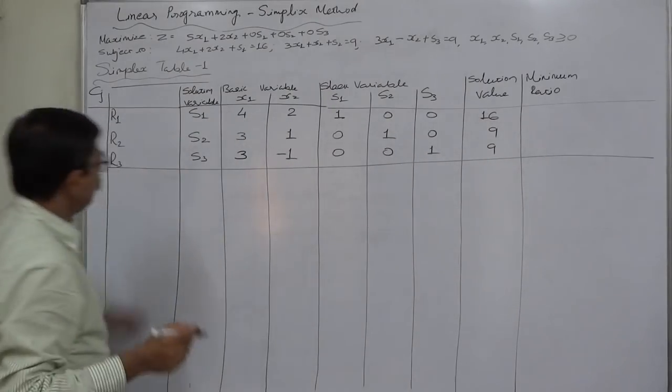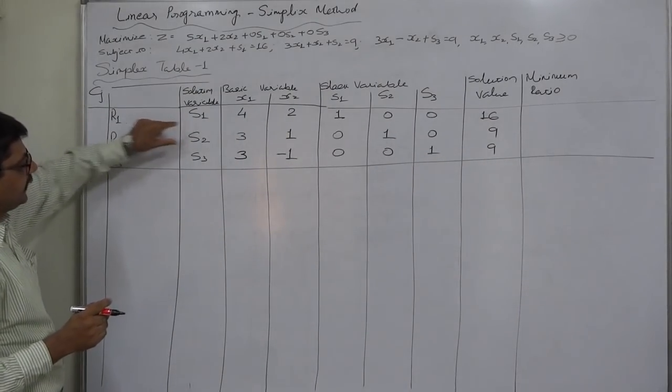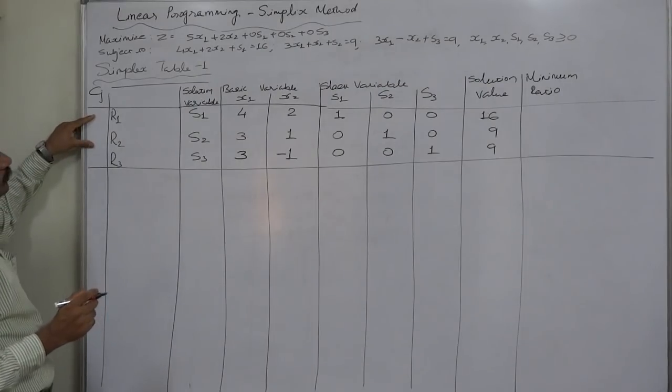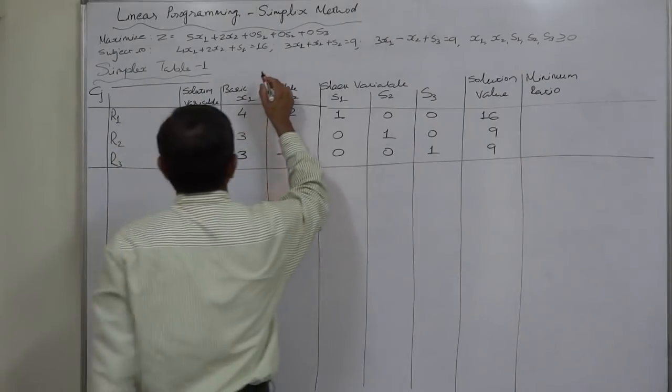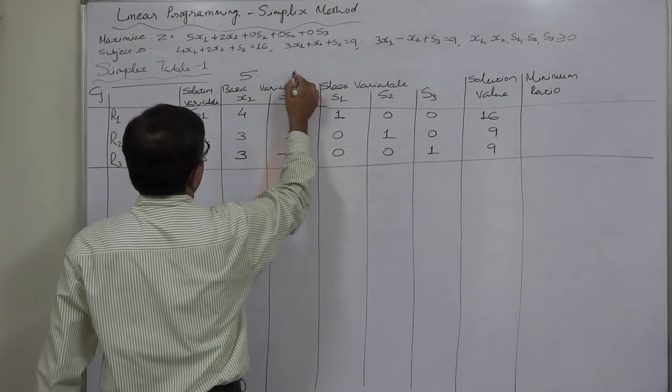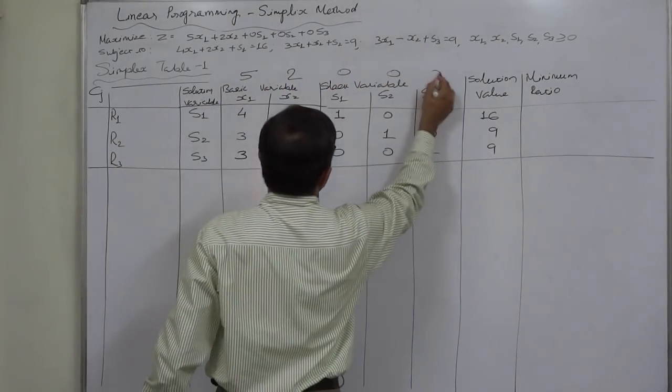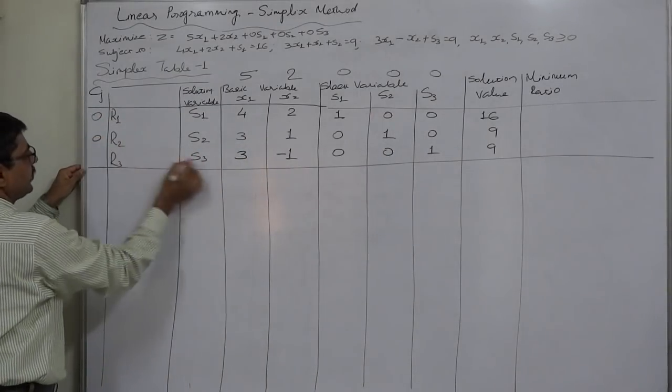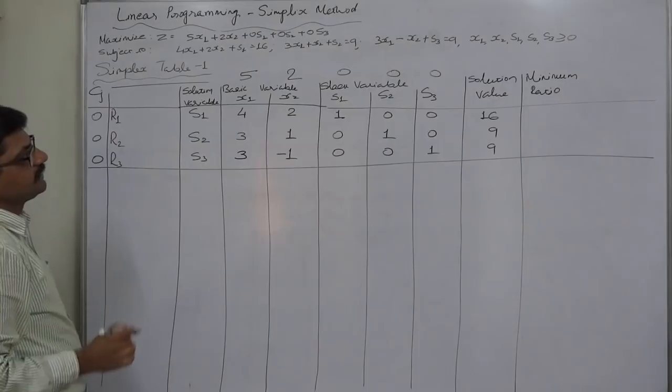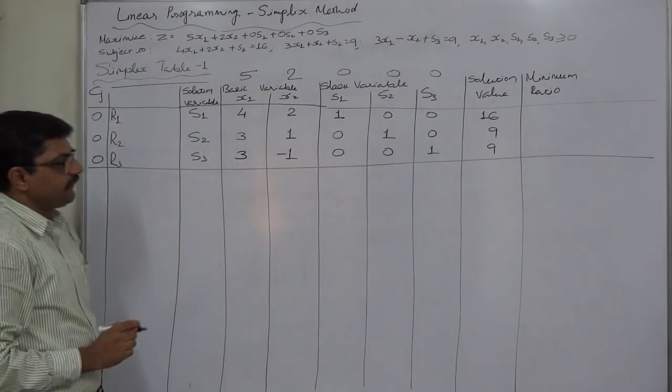Now we have all three slack variables as solution variable. We have to write their CJ values in the column and as well as in the row. They are 5, 2, 0, 0 and 0 so 0 for S1, 0 for S2 and 0 for S3 from the CJ row or Z function.